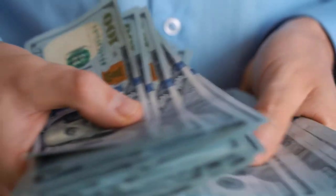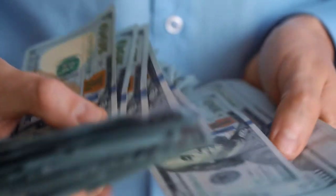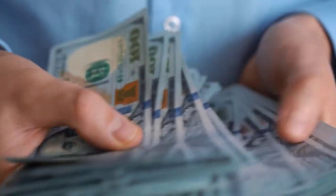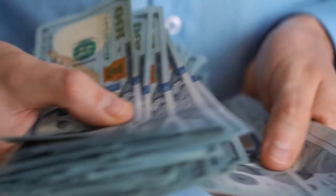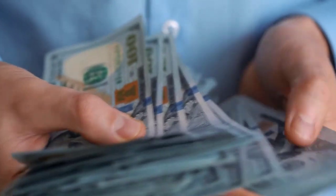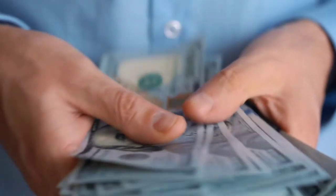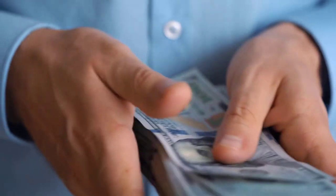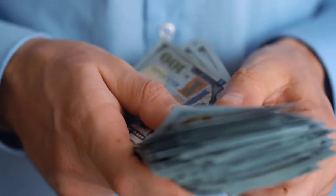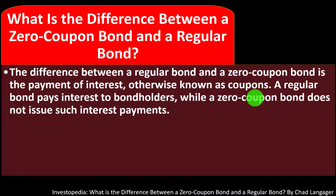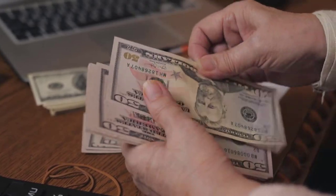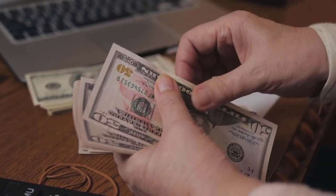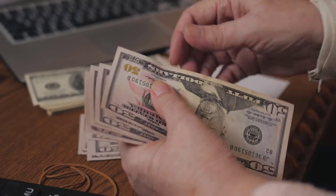If you're talking about zero coupon bonds, you have a situation where you're not getting payments on a periodic basis — neither interest nor principal. Instead, you're going to get the payment at the end, which will account for the interest that has accrued during that period. You will typically buy the bond at an amount less than the face amount, and the difference is in essence the interest you receive at maturity.